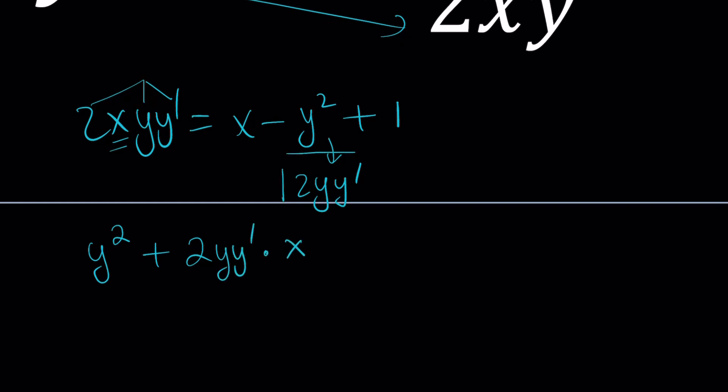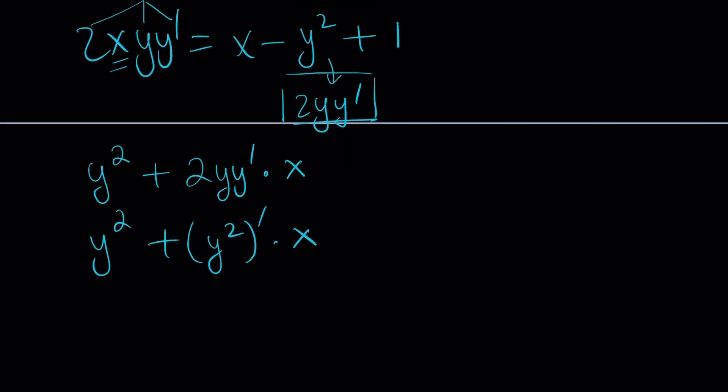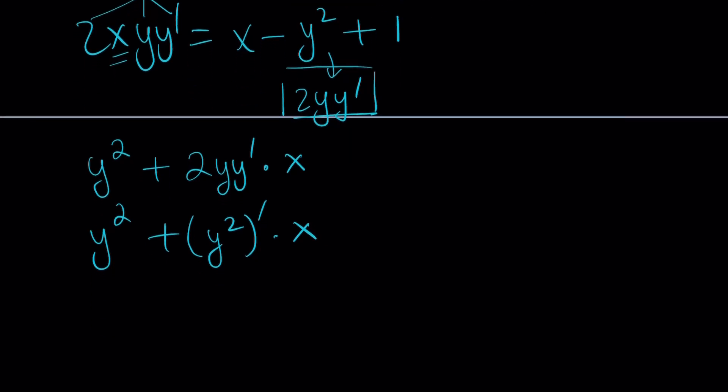Notice that this is the derivative of y², which is good. So I have y² plus the derivative of y² multiplied by x. Does that mean anything? Well, if you think about it, the derivative of x is 1. If you just add that as a product, because 1 is always possible, you get f'g + g'f. What does that remind you? f'g + g'f.